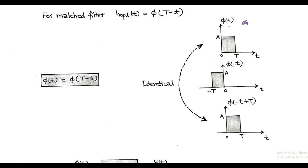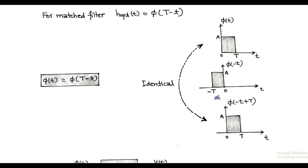φ(t) is given with finite energy over the interval zero to capital T. First, we take the time reversal, so the function becomes φ(−t), having duration from −T to zero. After time reversal, we apply time shifting. For a negative-time argument, adding capital T represents a time delay, so we shift φ(−t) to the right by capital T. We find that φ(−t + T) is identical to the given signal φ(t), and this is the optimum impulse response of the matched filter.